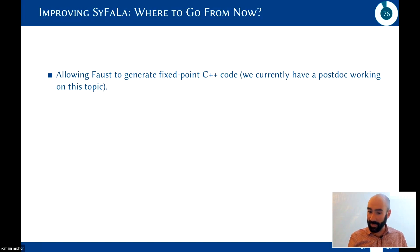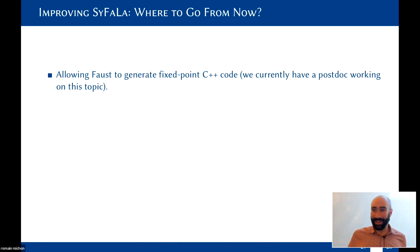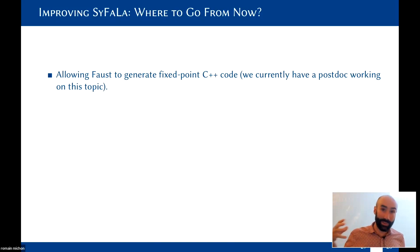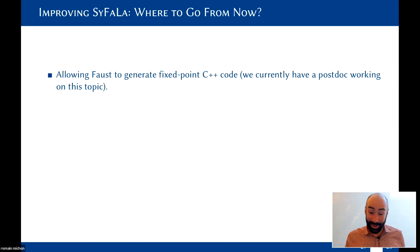One thing we're doing to improve this is generating fixed-point C++ code with Faust. Faust currently uses only floating-point, but for FPGAs you want fixed-point. This requires interval calculations done recursively, which is not easy. We have a postdoc working on this topic right now. We have a prototype but it's still not perfect — SNR is not yet optimal.